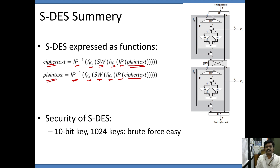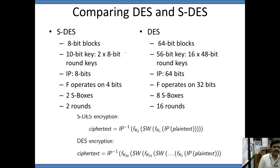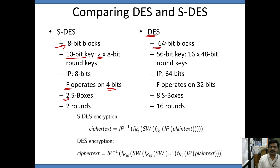Looking at the security of SDES, since it uses a 10-bit key, the total number of possible keys is 1024, which makes it very easy to perform a brute force attack. Comparing DES and SDES: SDES uses an 8-bit plaintext and 8-bit ciphertext, a 10-bit key, two rounds of operations, round functions working on 4 bits, and two substitution boxes. DES uses 64-bit plaintext producing 64-bit ciphertext with a 56-bit key and has 16 rounds of operations with 48-bit round keys each.